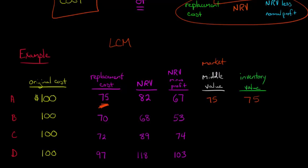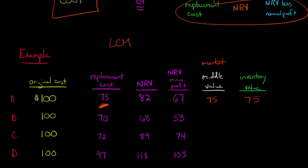Now in situation B, we take a look at these three values and pick the middle one. The middle one is 68, so 68 is going to be our market value. We compare that to the original cost of 100 — 68 is lower — so our inventory value is going to be 68.